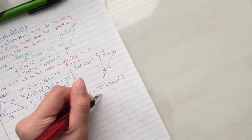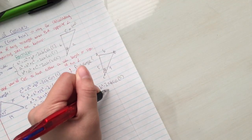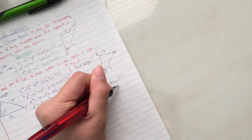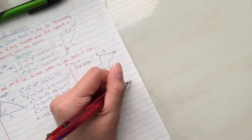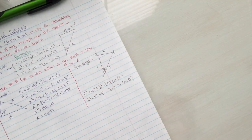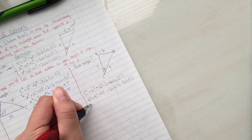...you can plug in the third side as 6 squared equals the two other sides, 5 squared plus 9 squared minus 2 times 5 times 9 times cosine of c.